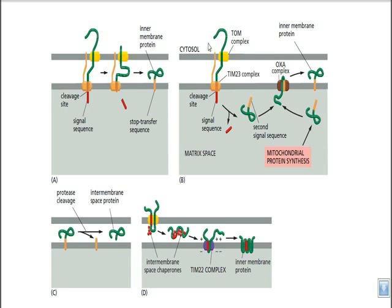For example, a long protein is transported through the TOM complex, which is present in the outer membrane of mitochondria. Throughout the TOM complex the protein travels and enters through the TIM complex into the mitochondrial matrix. These kinds of proteins need two different signals: one signal sequence that targets the protein to the mitochondria, and a second signal sequence needed to embed it into the inner membrane — a two-component signal system.